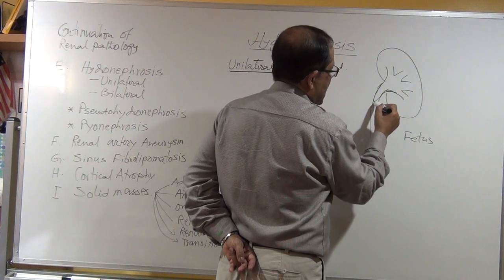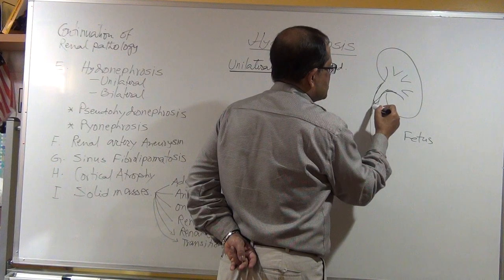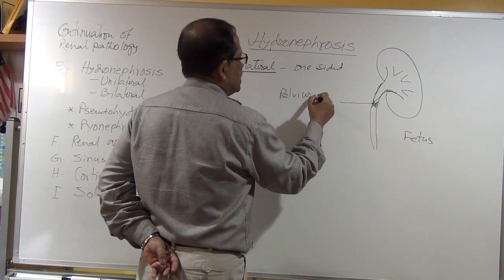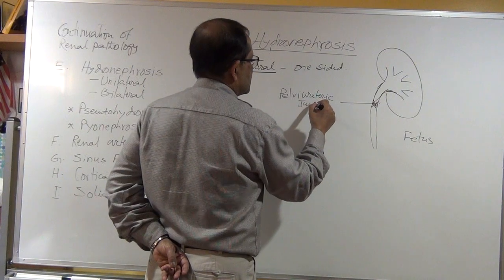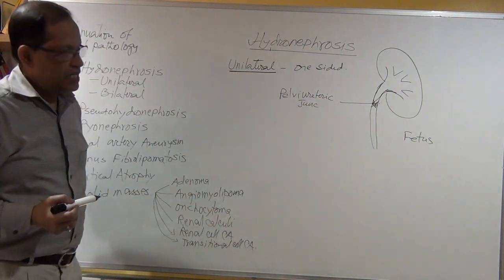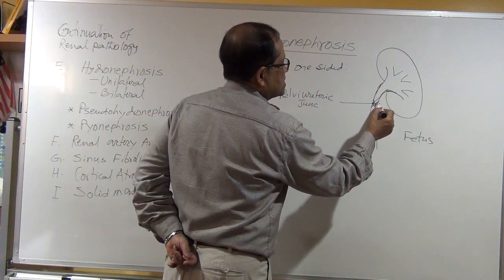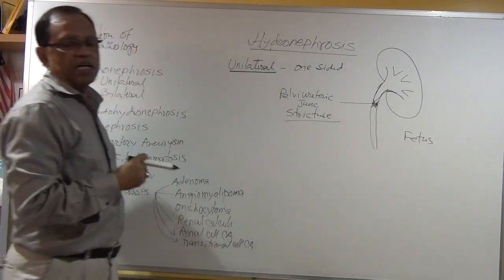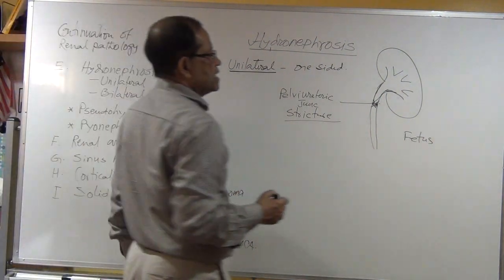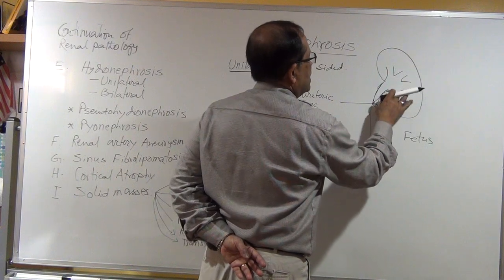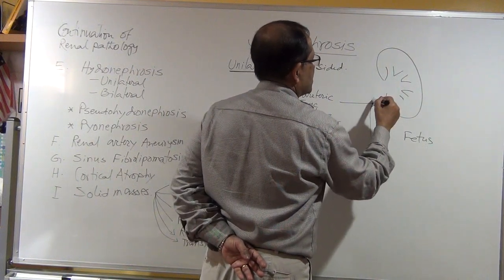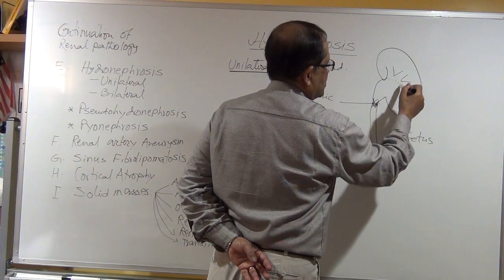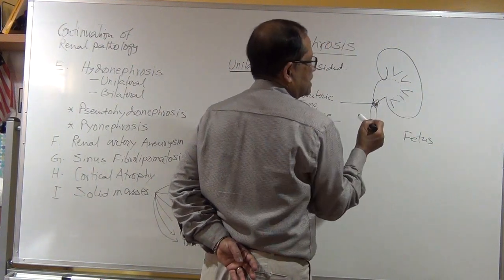If there is a stricture at the pelvi-ureteric junction — where the pelvis meets the ureter — there is a congenital tightness. This causes dilatation of the pelvis, and gradually the major calyx and minor calyx all become dilated.